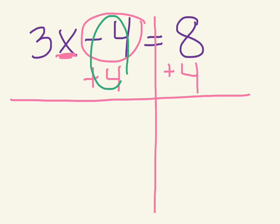There's negative 4 and 4 made a zero pair. So that's canceled out, but I still have my 3x over here. I have my equal line and 8 plus 4 is 12.